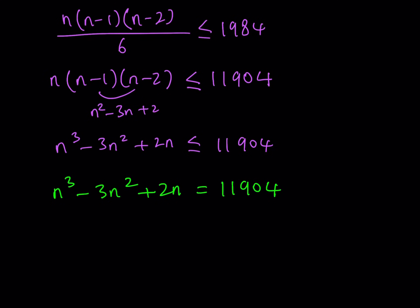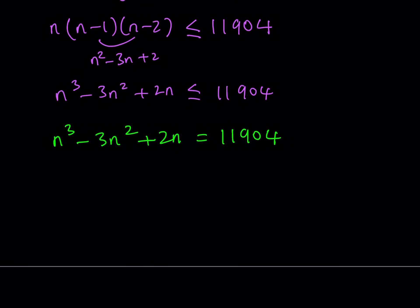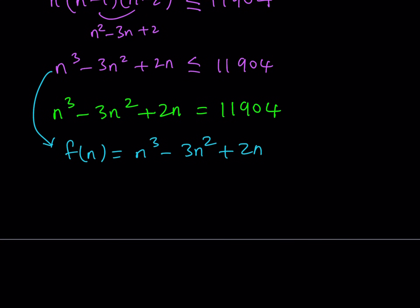I'm going to talk about a little bit of calculus here. In order to understand how a function behaves, we need to look at its derivative. So if this function is called f of n — I'm talking about the left-hand side only, n cubed minus 3n squared plus 2n — if I differentiate this function, I'm going to be getting something like 3n squared minus 6n plus 2. And if I set it equal to 0, I'm going to be finding the maximum and minimum points for this function. There are going to be some irrational numbers, but it'll give me some ideas about what it looks like.